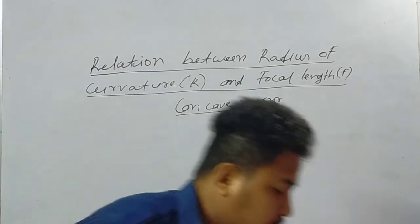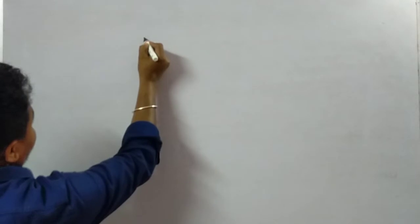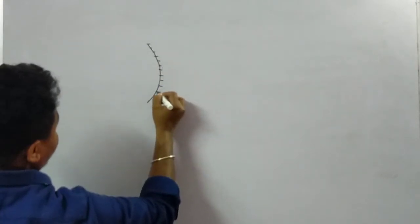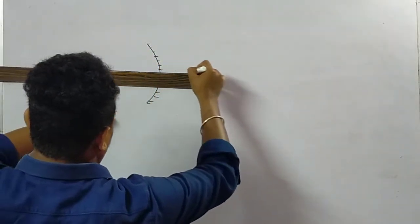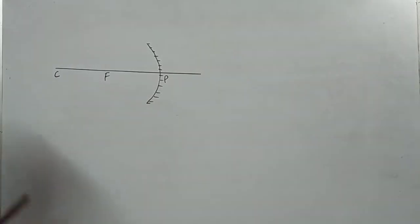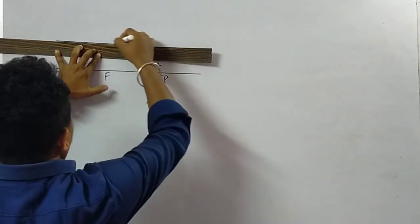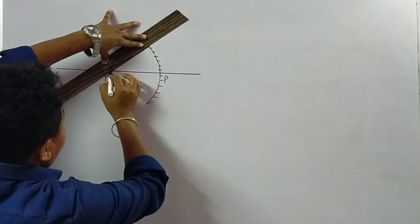For this, I'll consider a concave mirror — a concave mirror whose reflecting surface is curved inward. Here is the principal axis of the concave mirror. This point will be the pole of the mirror, this is the principal focus, and this is the center of curvature. If I consider a ray coming parallel to the principal axis, after reflection this ray will pass through the principal focus.